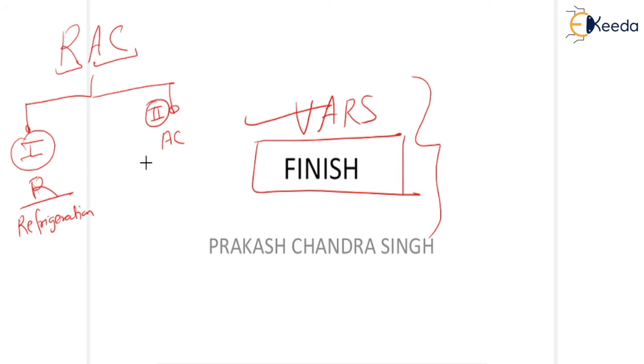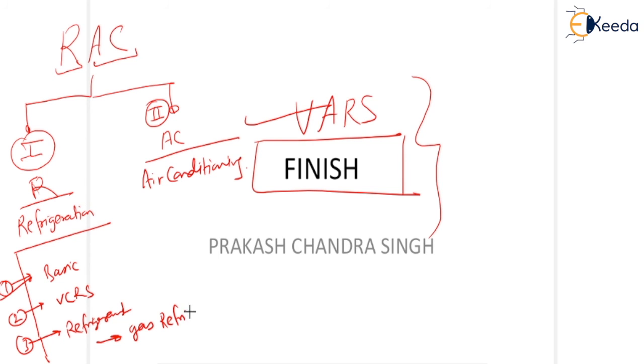Next, and what is the meaning of AC? Air conditioning. So my dear friends, here in refrigeration, first chapter which you have learned was basic. Second chapter which you have learned was VCRS. Third chapter which you have learned was refrigerant. Fourth chapter which you have learned was gas refrigeration system, that means Bell-Coleman cycle. And fifth which you have learned was VARS.